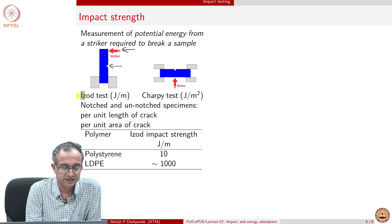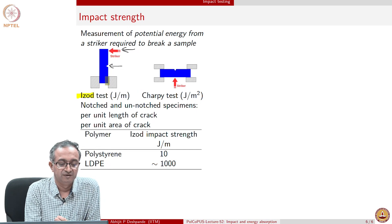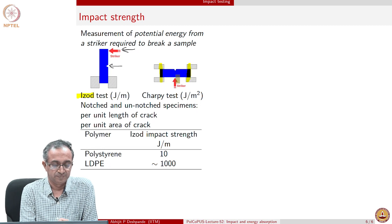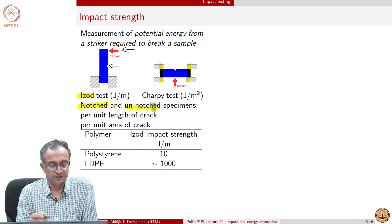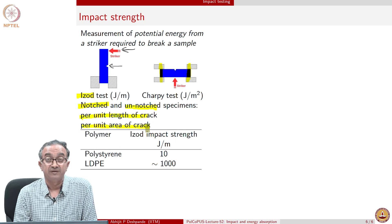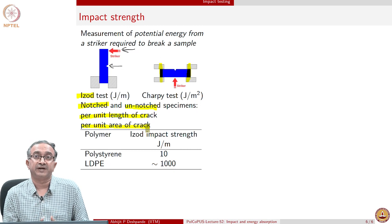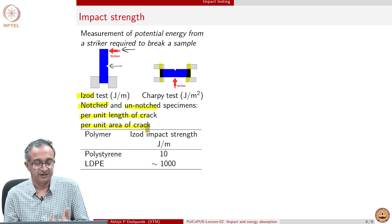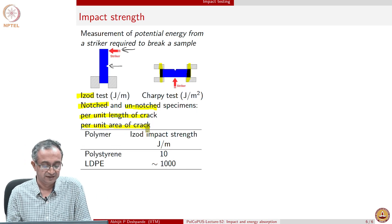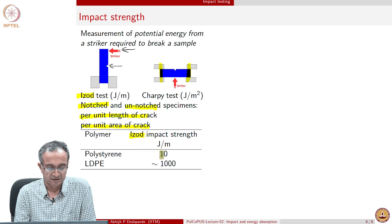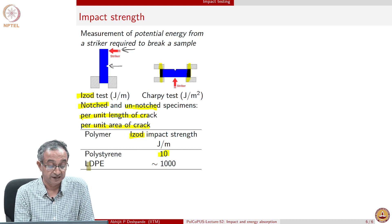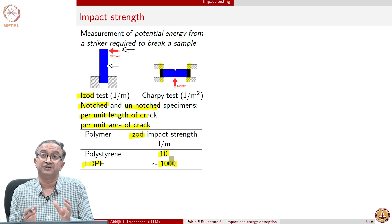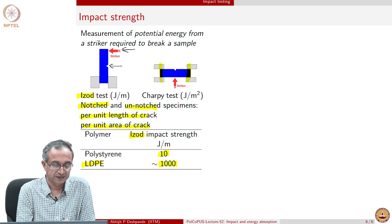There are two different tests: one is called Izod and the other is Charpy. In Charpy, both sides of the specimen are clamped and the striker hits in the center; in Izod, one side is clamped. Testing can be done with notched or unnotched specimens. Impact strength measures are based on per unit length in the Izod test and per unit area of the crack in the Charpy test. To give you an idea of numbers: polystyrene has an Izod impact strength of 10, while LDPE — which sometimes may not even break — is 1000 or above. That is two to three orders of magnitude difference.